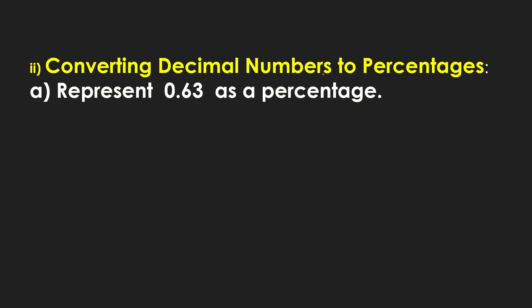Converting decimal numbers to percentages. Represent 0.63 as a percentage. First we'll remove the point, here we'll write 1. And here is 1 digit, 2 digits. Since it's 2 digits, we write 2 zeros here.